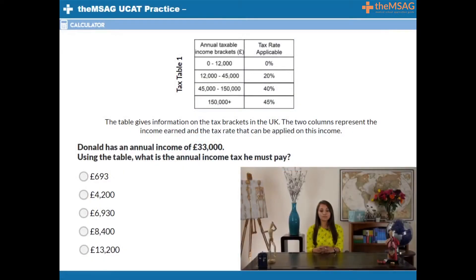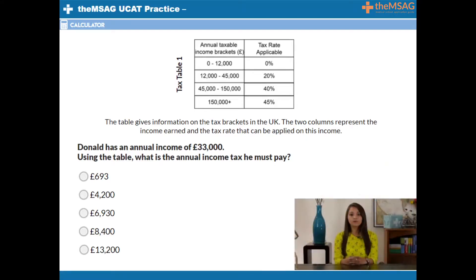Question 1. Donald has an annual income of £33,000. Using the table, what is the annual income tax he must pay? The important thing to know about tax is that you only pay the rate for the amount of income that sits in that rate bracket.